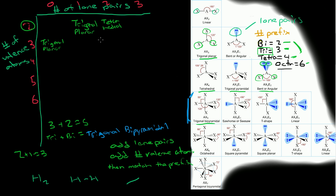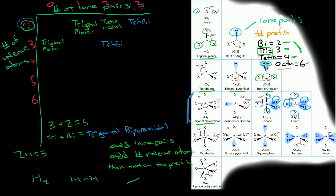Let's double-check: 3 valence atoms and 2 lone pairs, total equals 5 — that gives us trigonal bipyramidal. Will that also work for 3 lone pairs and 2 valence atoms? Yes — 3 lone pairs and 2 valence atoms is also trigonal bipyramidal. And 2 lone pairs plus 2 valence atoms equals 4, which corresponds to tetra, so that's tetrahedral.